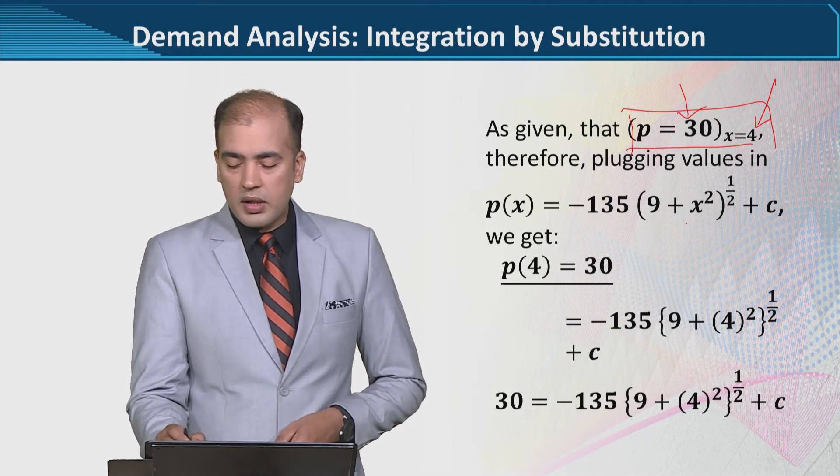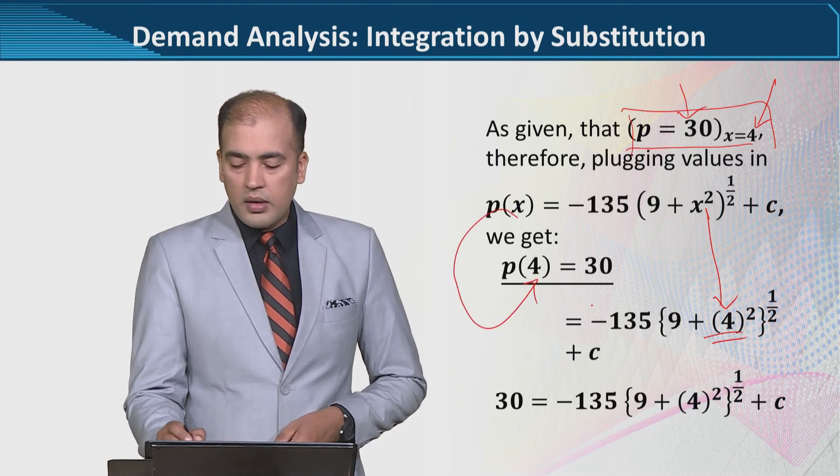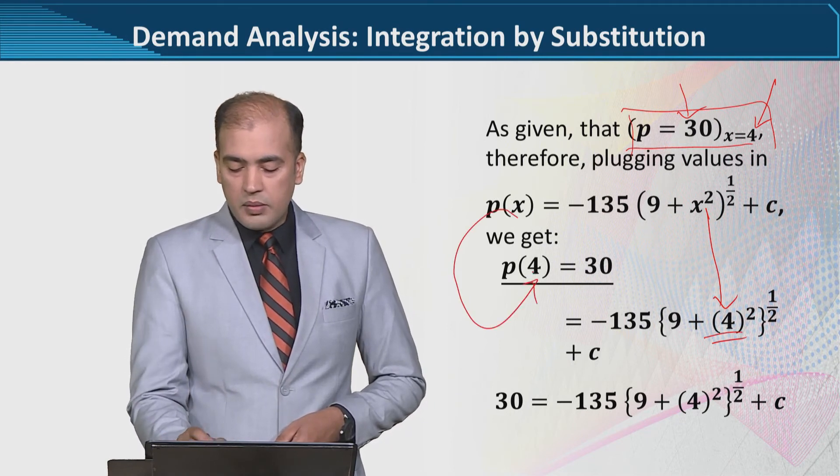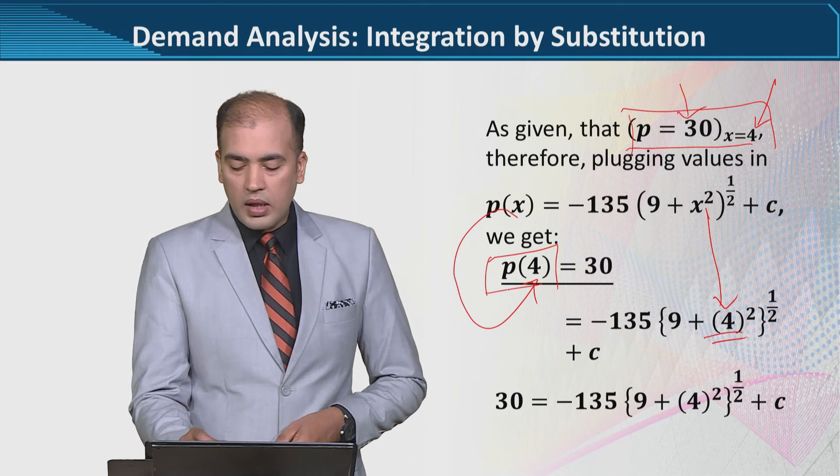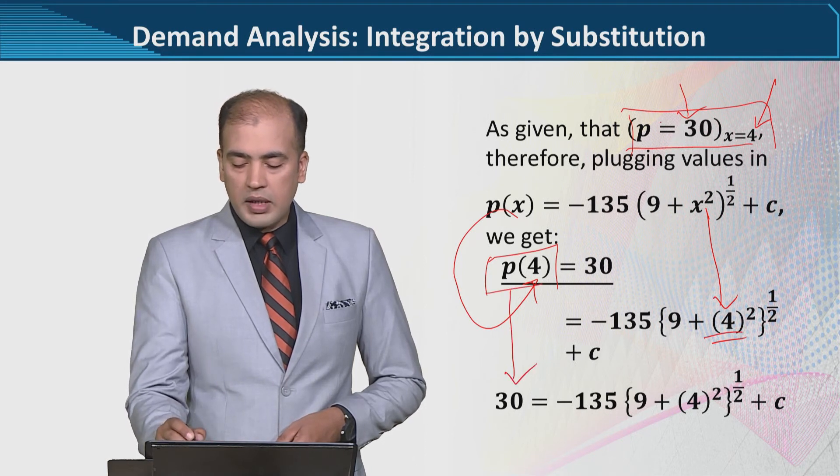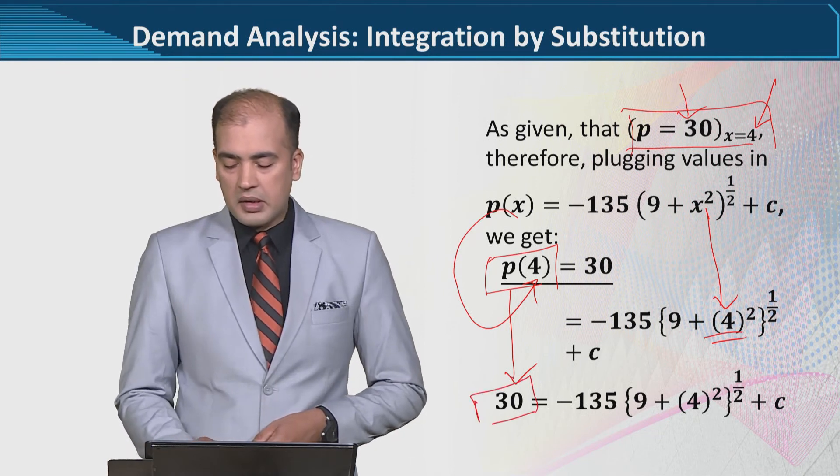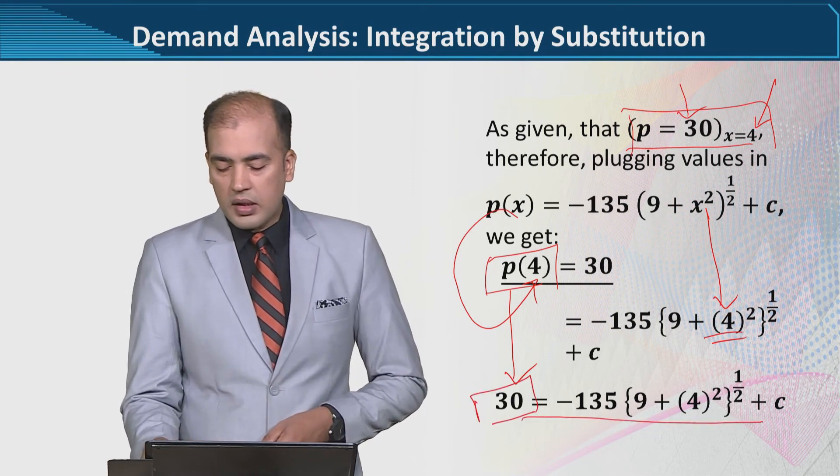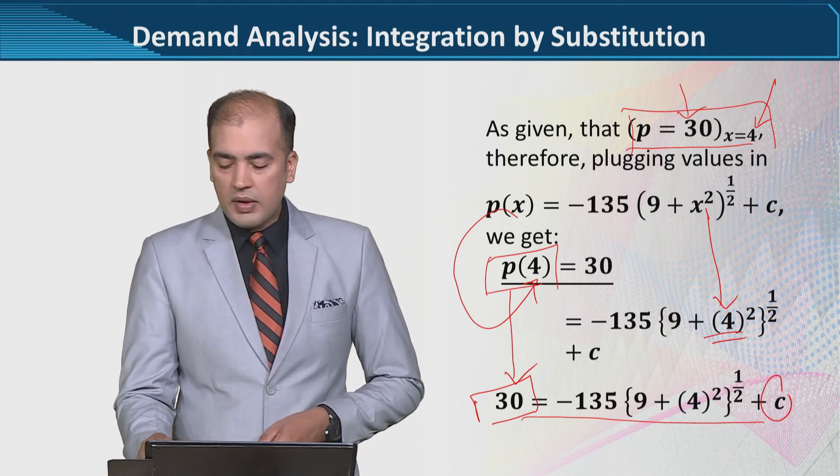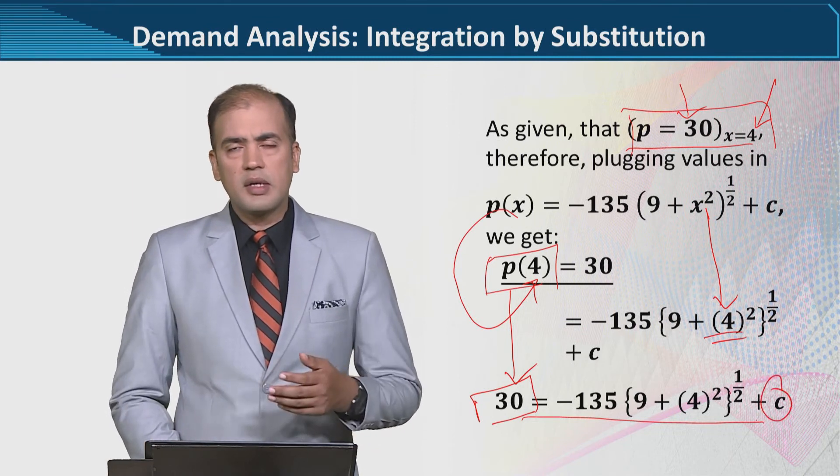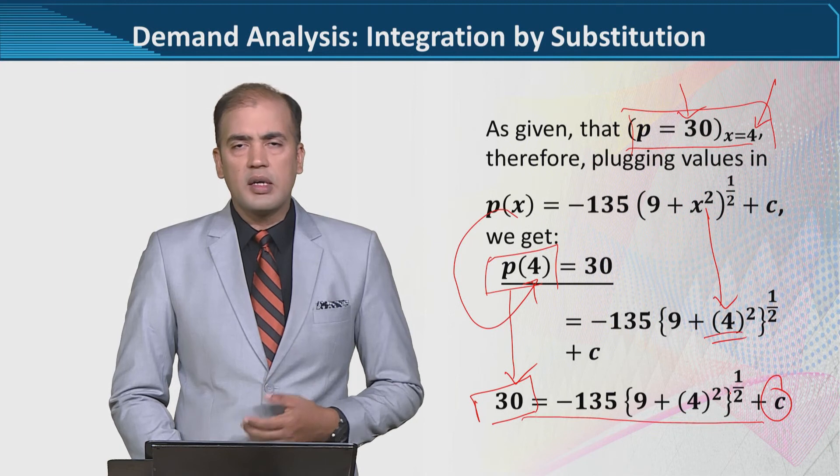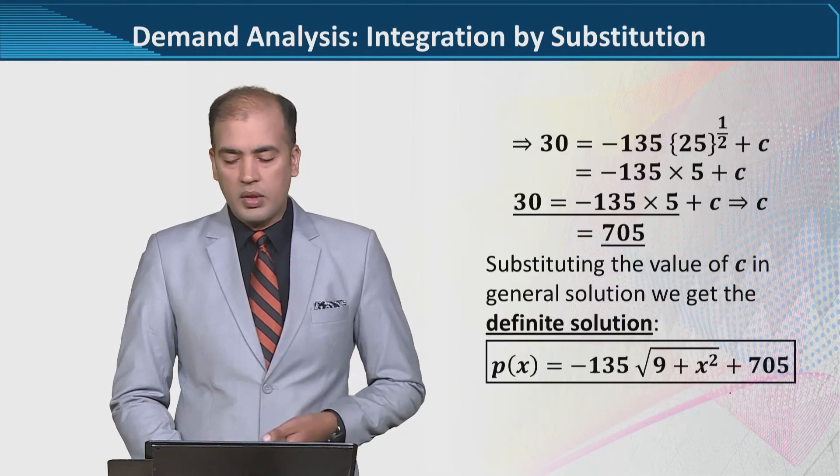You see, in place of x we put 4, and when x is 4, p will be 30 as we were told above. So we write p(4) equals 30. I've marked this in a box. Now we will solve this, and the value of c will be determined, and we will move from general to definite solution. We've done this before, and here we are doing the same thing, but the variables are different.